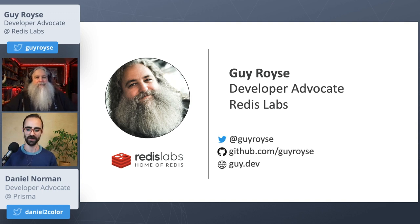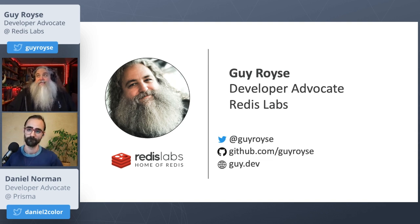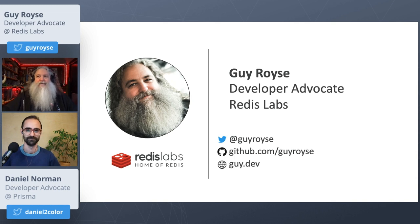Does Redis Graph have the notion of indices — can you create an index for certain queries? It does, and it can actually use Redis Search to do a full-text search of content within the graph as well, so you could say give me all the nodes that contain the word 'blue' or something like that.